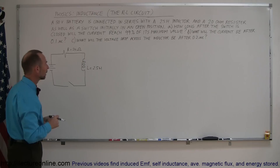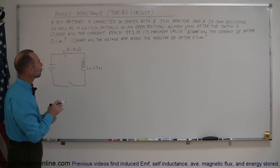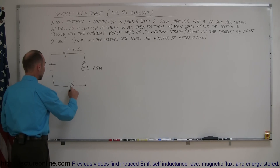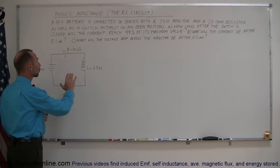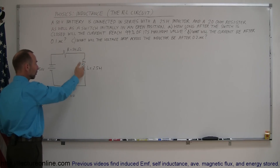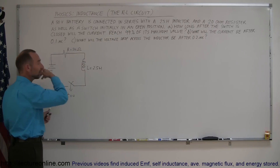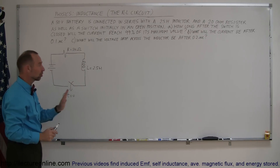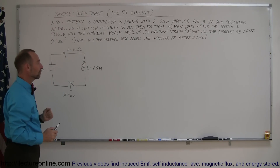Let's start with part A. We want to know how long it takes for the current to reach 99% of its maximum value. After we close the switch at T equals 0, what an inductor does is it prevents a current change. So if the inductor wasn't there, the moment we close the switch, current will instantly begin to flow. But the inductor holds back that initial surge of the current, so it takes a while for the current to reach its maximum value.